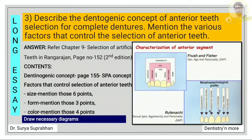The next question: describe the dentigenic concept of anterior teeth selection for complete denture and mention the various factors that control the selection of anterior teeth. Refer chapter 9, page number 152. For the first part, write what is the dentigenic concept, including the SPA concept — that is sex, personality, and age. For the factors controlling selection of anterior teeth, write about size, form, and color.